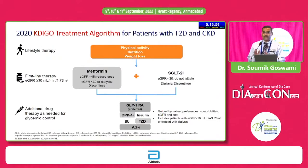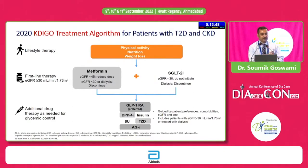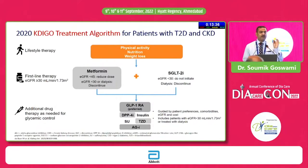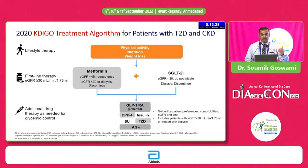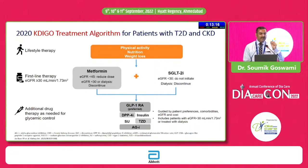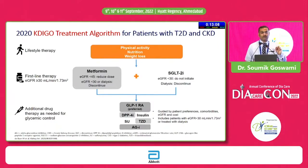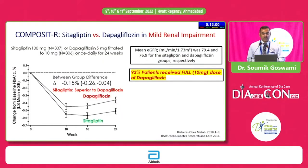She has moderate renal dysfunction, which is a compelling indication to use an SGLT2 inhibitor with proven benefits. Since her eGFR is less than 45, we can use only 1 gram of metformin — reduced from 2 grams. We add an SGLT2 inhibitor for the compelling renal indication. But given her moderate renal dysfunction, how efficacious would an SGLT2 inhibitor be? We know SGLT2 inhibitors have excellent efficacy and durability, but when renal function comes down, their efficacy goes down.